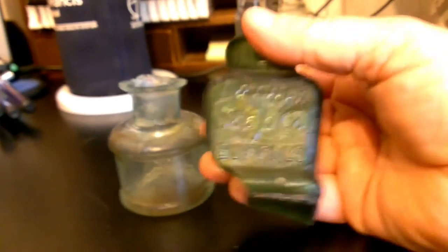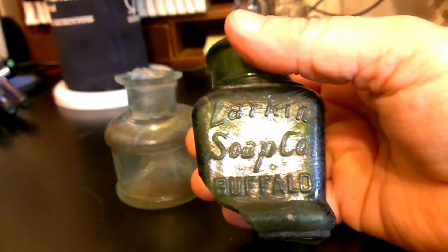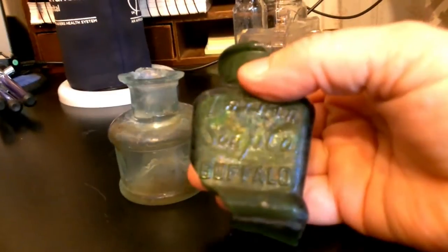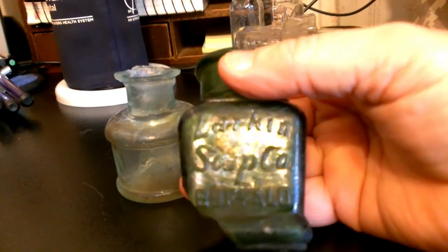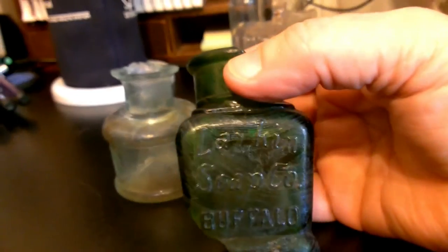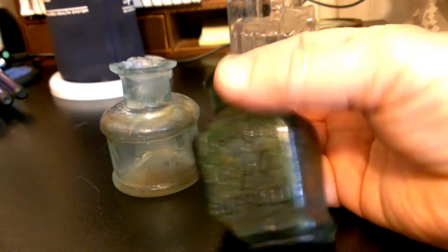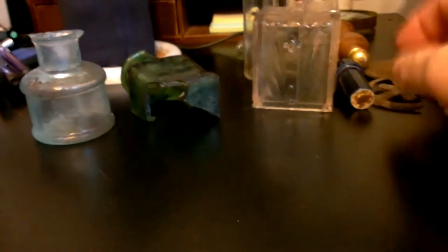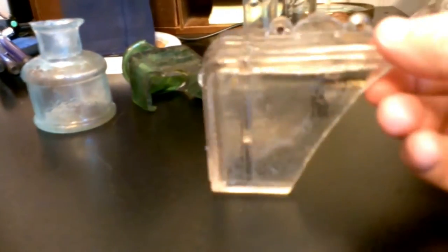This bottle here, obviously broken, but I brought it home anyhow because it says Larkin Soap Company Buffalo. And that's the first time I've run across a small green bottle like this that was embossed. So that would have been a really nice find if it wouldn't have been broken.